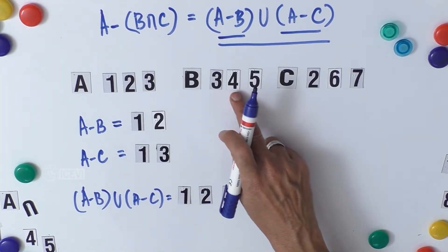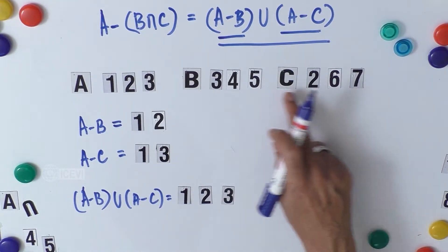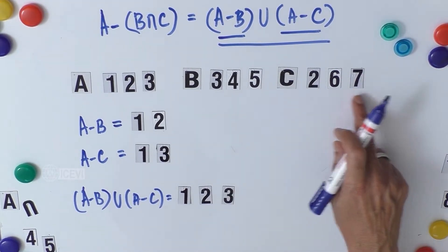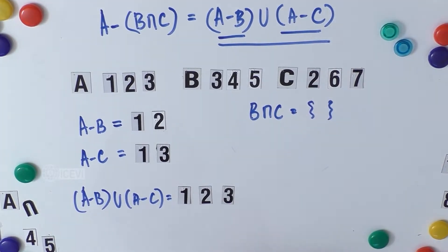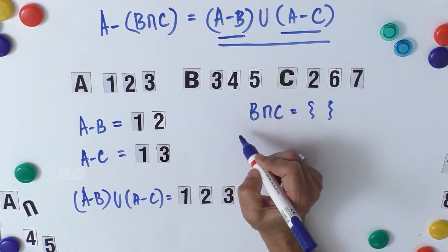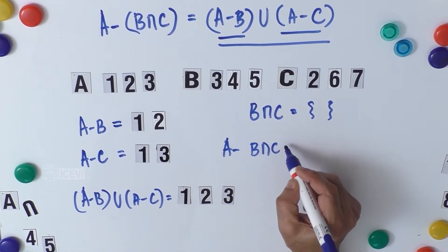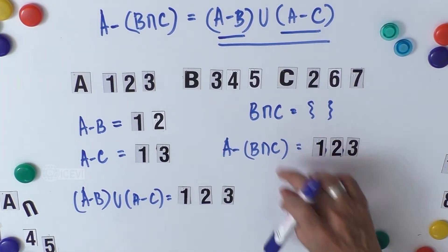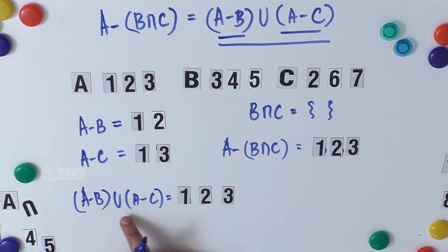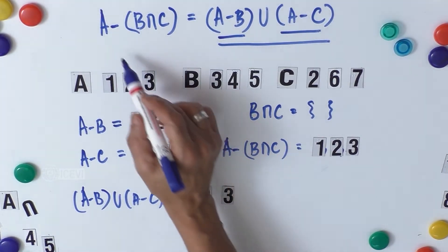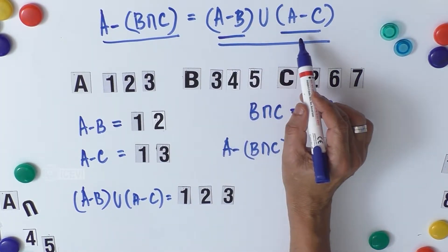Now let us find B intersection C. Set B has {3, 4, 5} and C has {2, 6, 7} — there are no common objects, so B intersection C is empty. Therefore A minus (B intersection C) is A minus empty, which gives {1, 2, 3}. Both sides equal {1, 2, 3}, confirming A minus (B intersection C) equals (A minus B) union (A minus C).